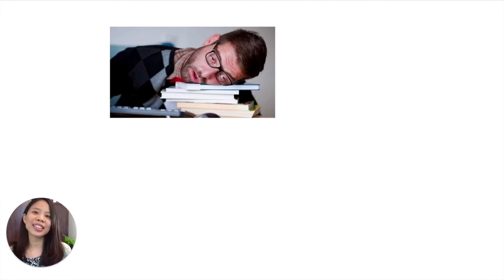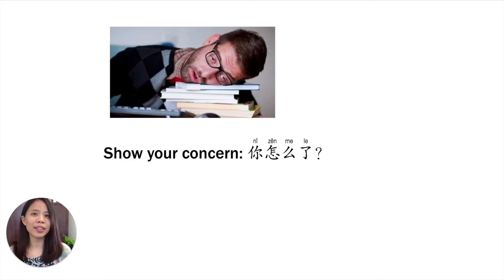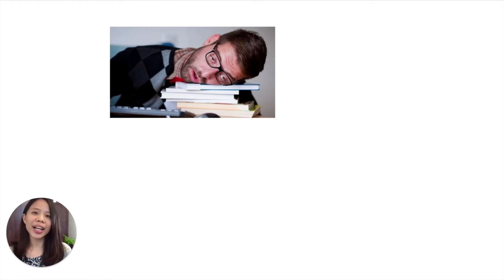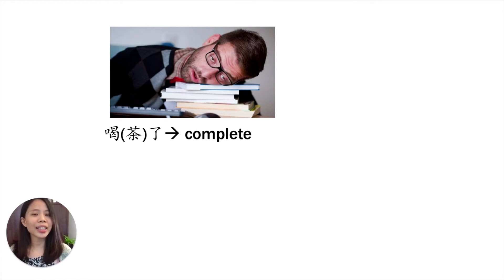You see your classmate behaving strangely. You want to ask: 你怎么了? Your classmate tells you: 昨天晚上，我喝茶了。所以我没睡觉。 From his reply, we know 喝茶了 — this action is complete.